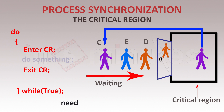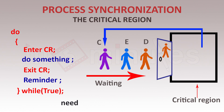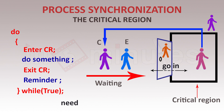The task involves accessing a file, database, or any resource. When you come out, it is your duty to fire a reminder — inform the next process to enter. For example, when process C comes out, it informs process D to get in. At that point, D shifts from the outside to the inside. This is basically how the critical section is supposed to work.